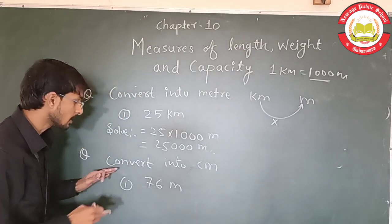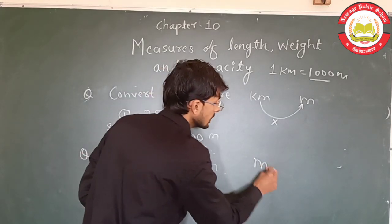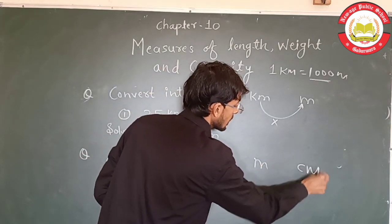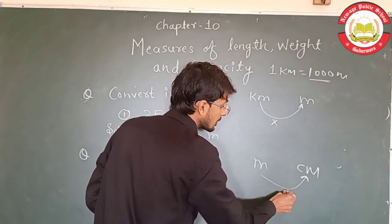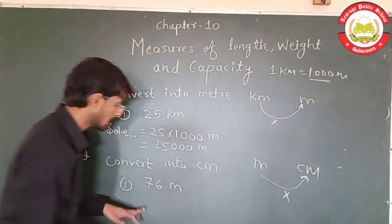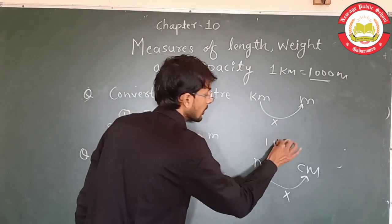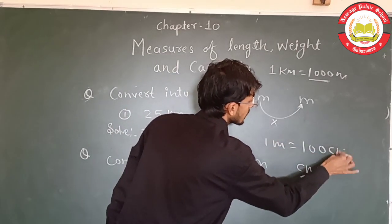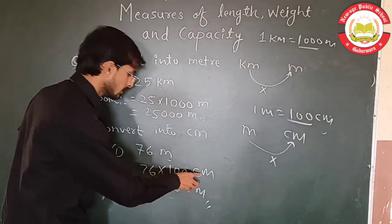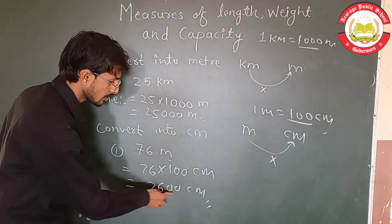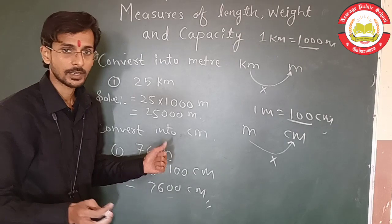Next question: convert meters into centimeters. Since centimeters is a smaller unit, we multiply. In 1 meter there are 100 centimeters. So 76 meters multiplied by 100 equals 7600 centimeters. That is how we solve this kind of question.